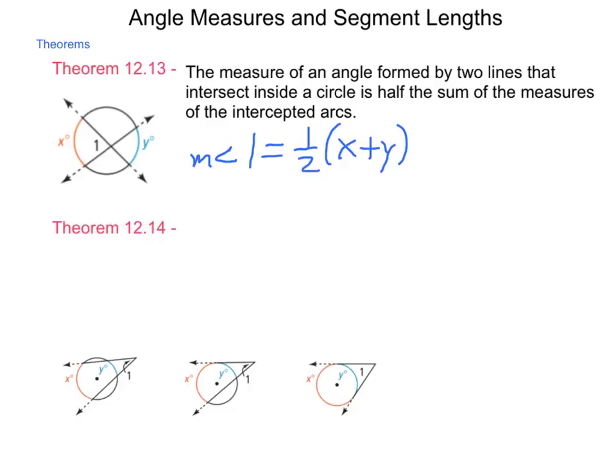So if the angles, or if the lines cross inside, and this would work for line segments also as long as they are chords, we find the intercepted angles or the intercepted arcs on the two sides and find the average of those two.